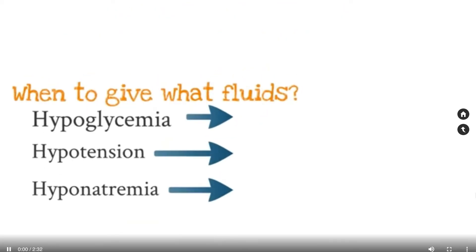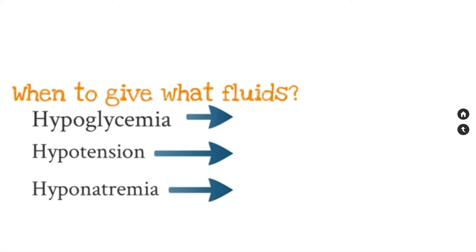Keep in mind the tonicity when using these solutions. If the patient is hypoglycemic — either they've gotten too much insulin or they're not eating very well — you can give them either D5W as a drip or D50 in amps, meaning about 50 cc's of D50. D50 is 50% dextrose, so whatever number follows the D indicates the percentage of dextrose within that solution.